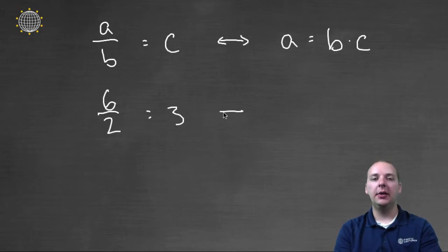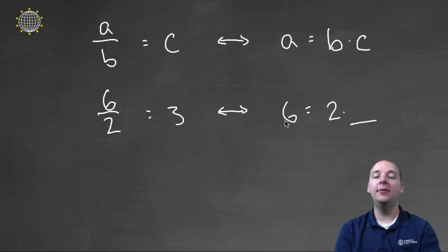But why would you say three? The reason you would say it would be three, is because you're looking for a number that, when you multiply it by two, it would give you six. And so, sure enough, two times three is six. So, that's equivalent to saying six divided by two equals three.